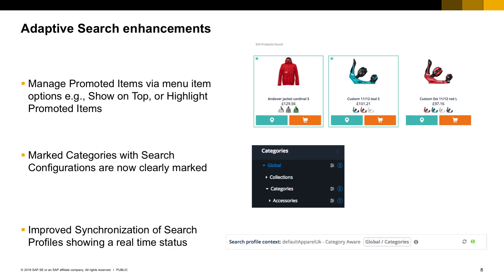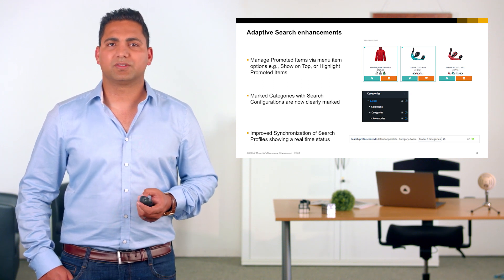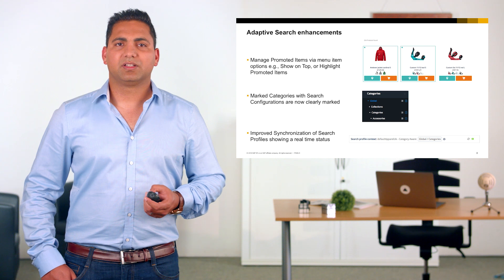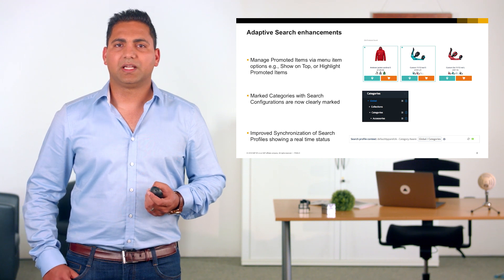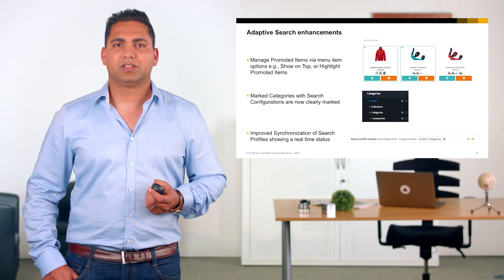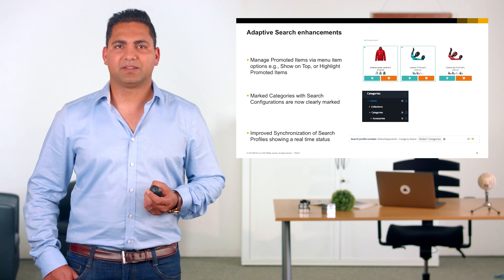For search and navigation, we have further enhanced the adaptive search solution by enabling the management of promoted items with new options. The 'show on top' option allows you to keep promoted items on top even with sorting applied. Additionally, the 'highlight promoted items' option allows you to distinguish chosen items in adaptive search or on the storefront. Categories for which you have defined search configurations are now clearly marked in adaptive search, and synchronization is now available in the adaptive search perspective.